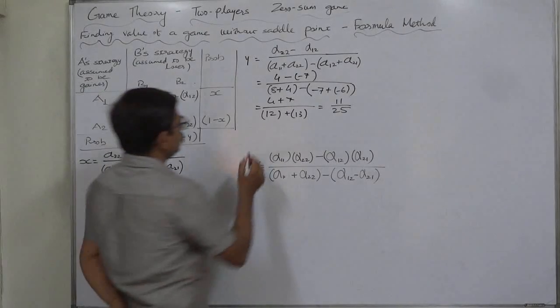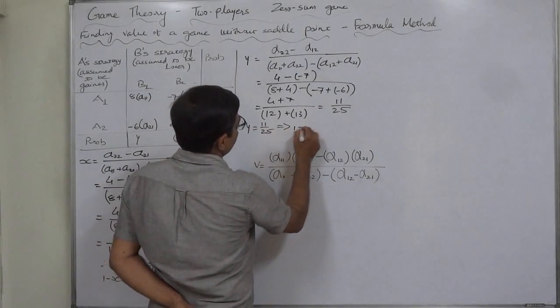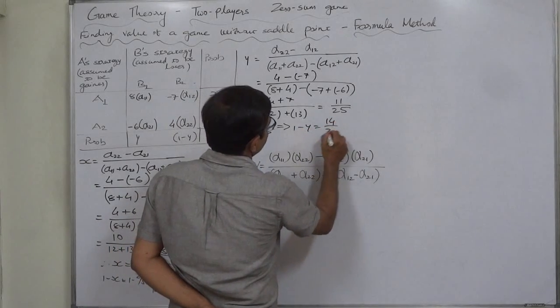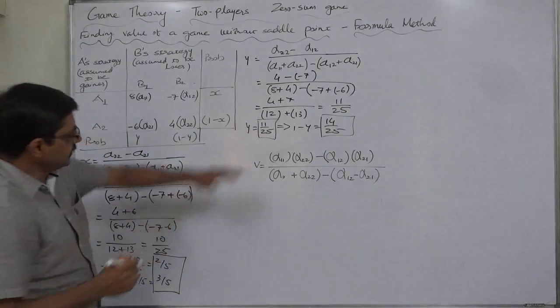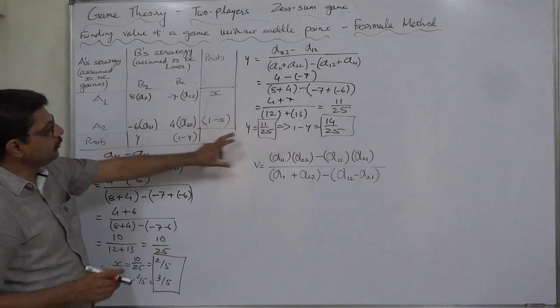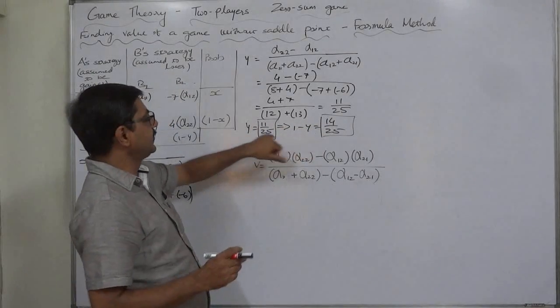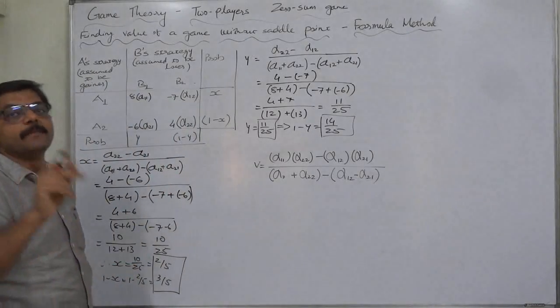Y comes to 11 by 25. So 1 minus Y comes to 14 by 25. 11 is to 14 ratio. The interpretation is B should use strategies B1 and B2 in the ratio of 11 is to 14. That is 11 by 25 and 14 by 25 in random manner.